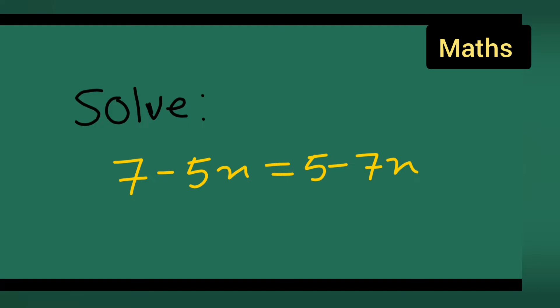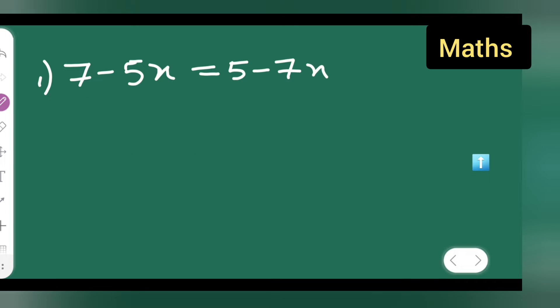In today's class of mathematics, today's question is taken from class 8 mathematics. The problem is: 7 minus 5x is equal to 5 minus 7x. Let us solve this. Don't forget to like, share, and subscribe to my channel and keep supporting for more questions like this.